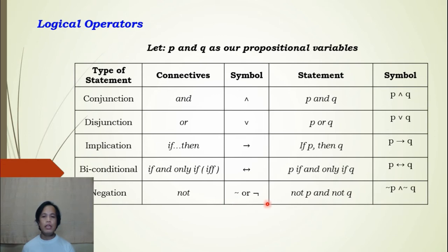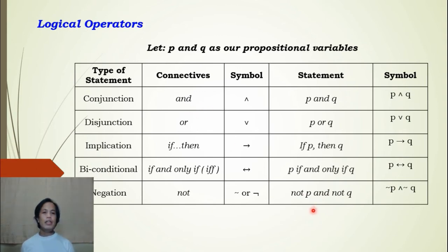Note that in the negation example, we used the word 'and,' which is used for conjunction. So this is an example of the negation of a conjunction. We can also negate disjunction, implication, or biconditional.